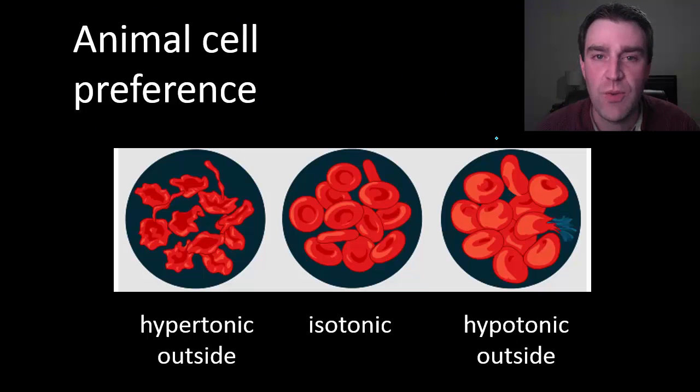So why does this matter in real life? Because the movement of water could really determine the health of cells. For example, our animal cells, our red blood cells, really need an isotonic solution outside. Our body works really hard to make sure there's about an equal amount of solute inside and outside so that water goes equally in and out and keeps them the right shape.